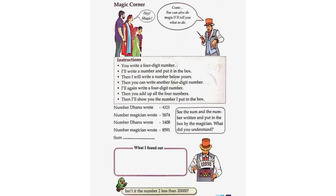Number Danu wrote: 4,325. Number Magician wrote: 5,674. Number Danu wrote: 1,408. Number Magician wrote: 8,591. The total sum will be 19,998. See the sum and the number written and put in the box by the magician. What did you understand? It is the same number — isn't it the number 2 less than 20,000?